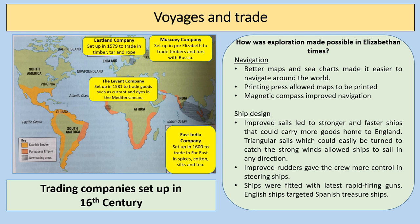The use of triangular sails which could be easily turned meant the English were fantastic at sailing. The whole phrase 'sailing close to the wind' comes from English ships during this time — they were able to manoeuvre very well through the water, which was crucial in the defeat of the Spanish Armada in 1588. Improved rudders gave the crew more control in steering, and these ships were fitted with the latest rapid-firing guns, making the English very effective at targeting and fighting against Spanish treasure ships.